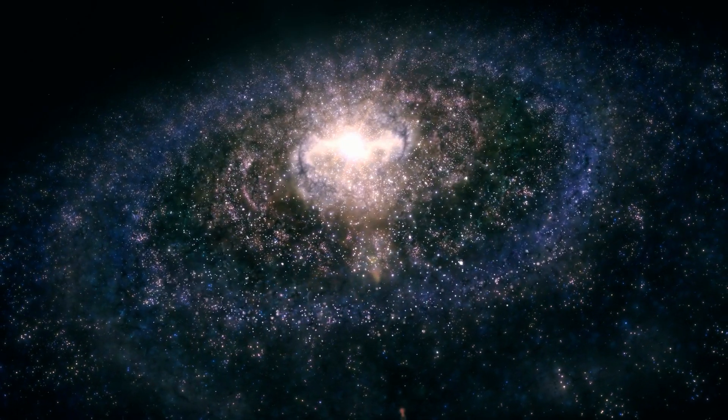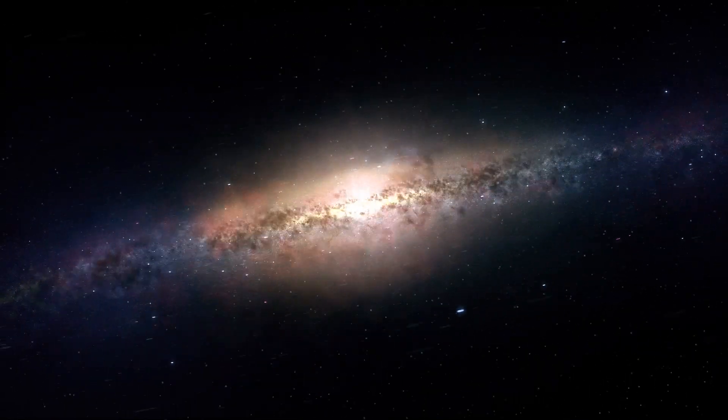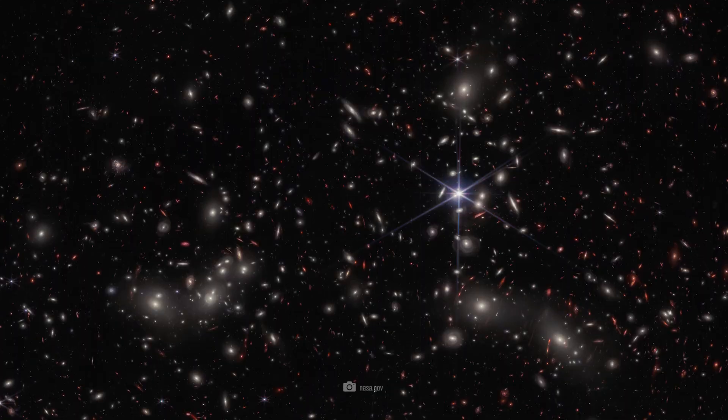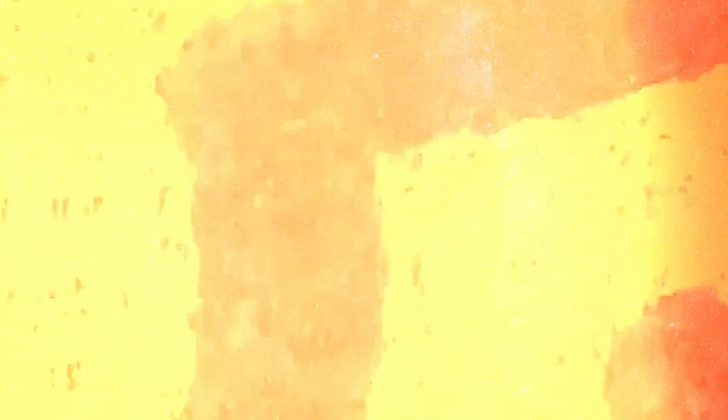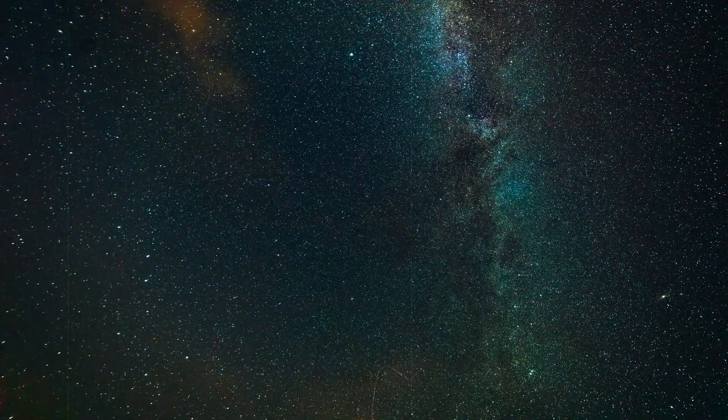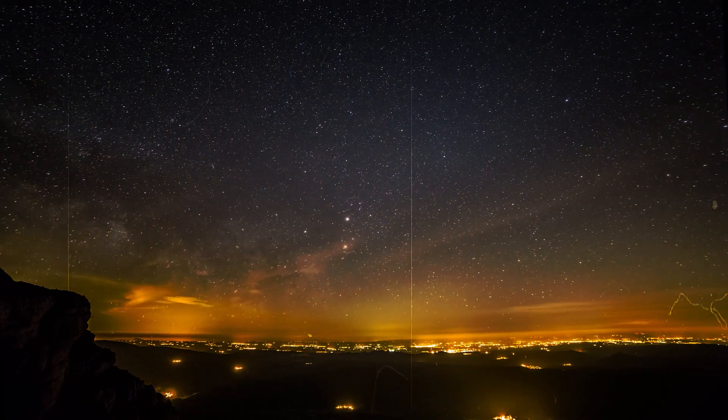The first galaxies were probably formed by the contraction and merging of smaller gas clouds and proto-galactic clumps. These early galaxies are thought to have been chaotic and small compared to today's galaxies. Over time, ongoing star formation and galactic mergers then led to ever larger and more structured galaxies.